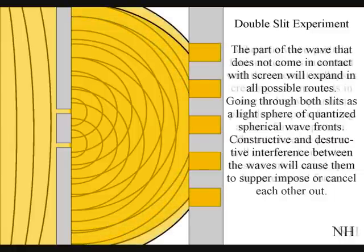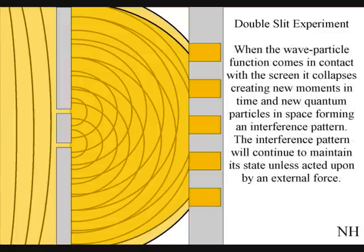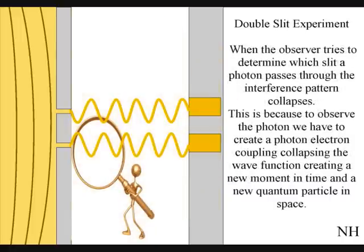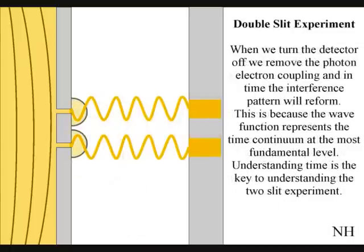When the observer turns on a detector to determine which slit a photon passes through, the interference pattern will collapse. This is because to observe the photon, we have to create a photon-electron coupling, collapsing each wave-front into a new quantum particle that will have its own position in space and time. If we turn the detector off, we remove the photon-electron coupling, and in time, the interference pattern will reform.